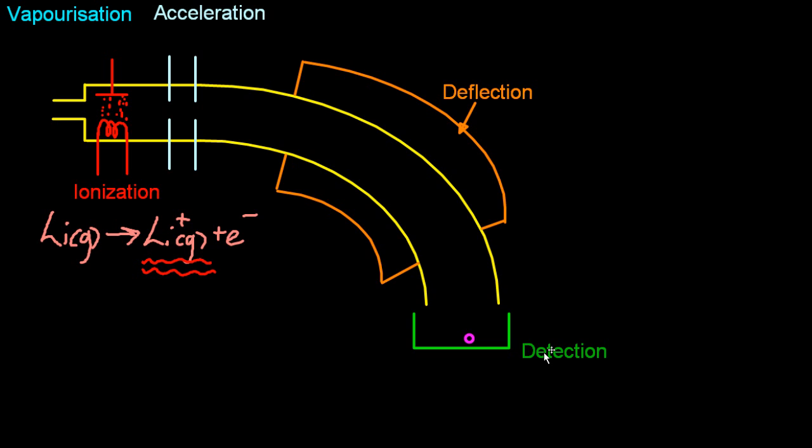And finally, the detector sends an electrical signal to the recorder and that signal is based on... It's a measure of the number of ions with that M over Z ratio that are detected. And that's the final step.